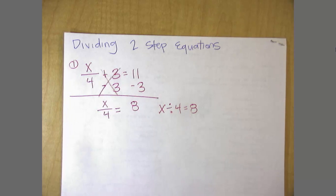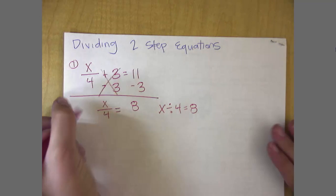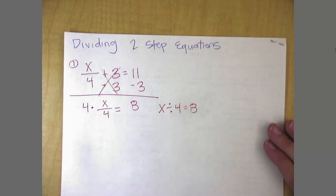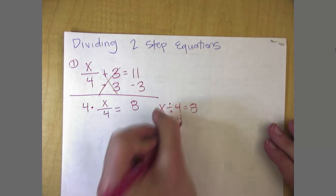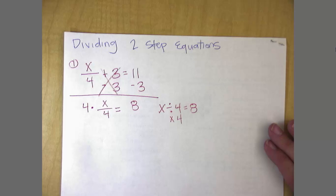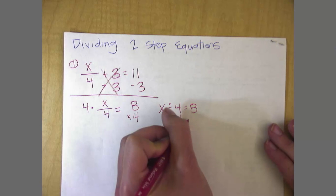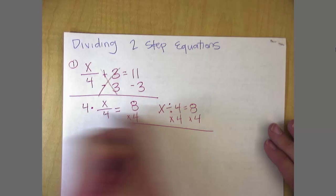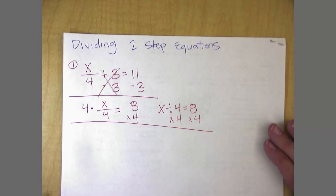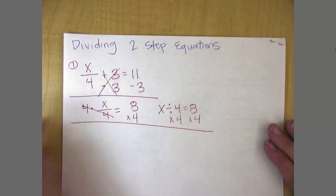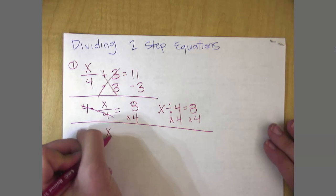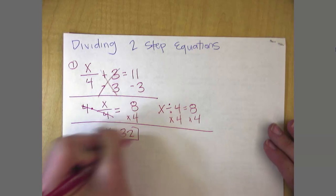So what do I need to do to undo dividing by 4? Multiply by 4. Multiply by 4, or you could show it right here. Multiply by 4. Of course, I want to do it on both sides. My 4's end up canceling out, and I end up with x is equal to 32.